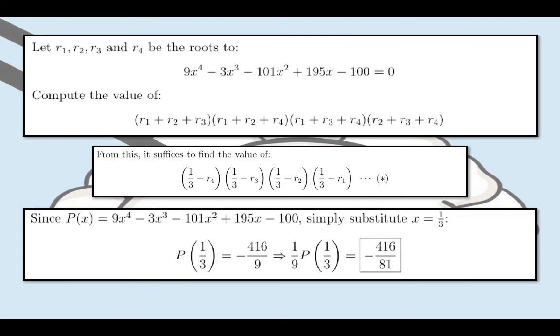Since P of 1 third equals negative 416 over 9, the desired expression star, which is equal to 1 ninth times P of 1 third, will simply be equal to negative 416 all over 81. And that will be our final answer.